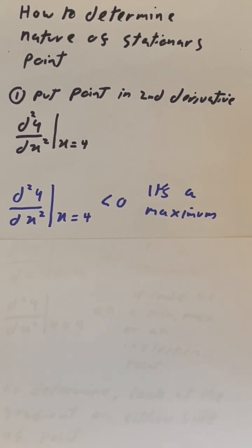Simply put the point into the second derivative. If it is less than 0, it is a maximum point. If it is greater than 0, then it is a minimum point.